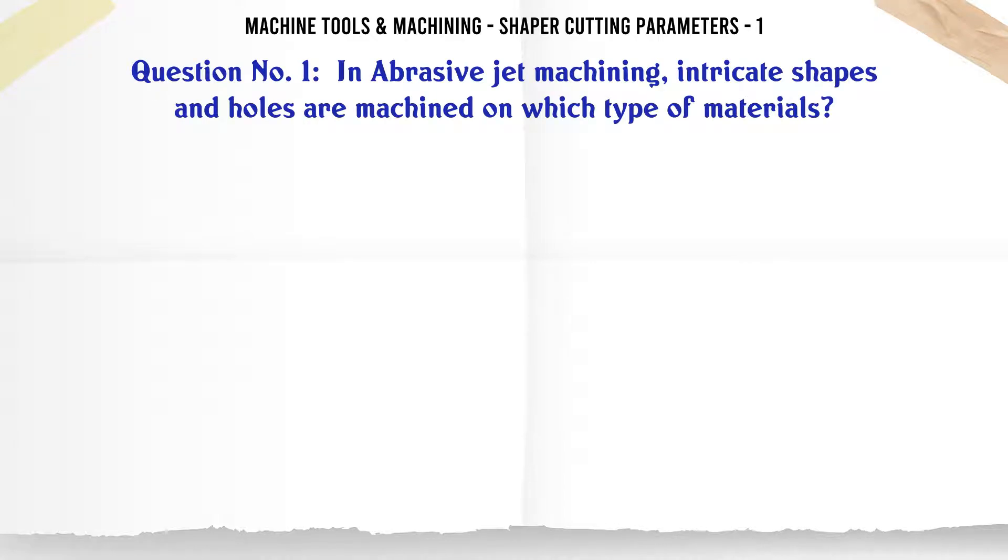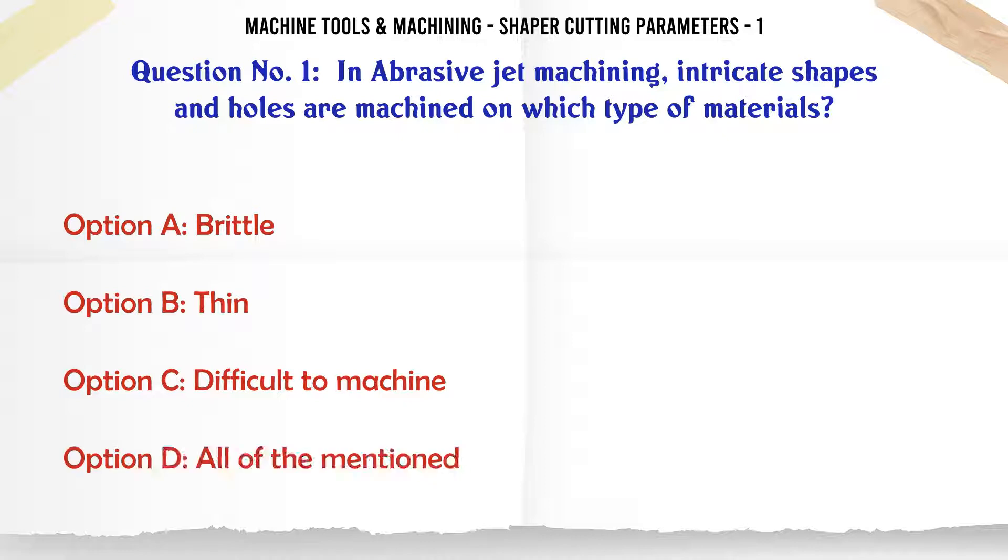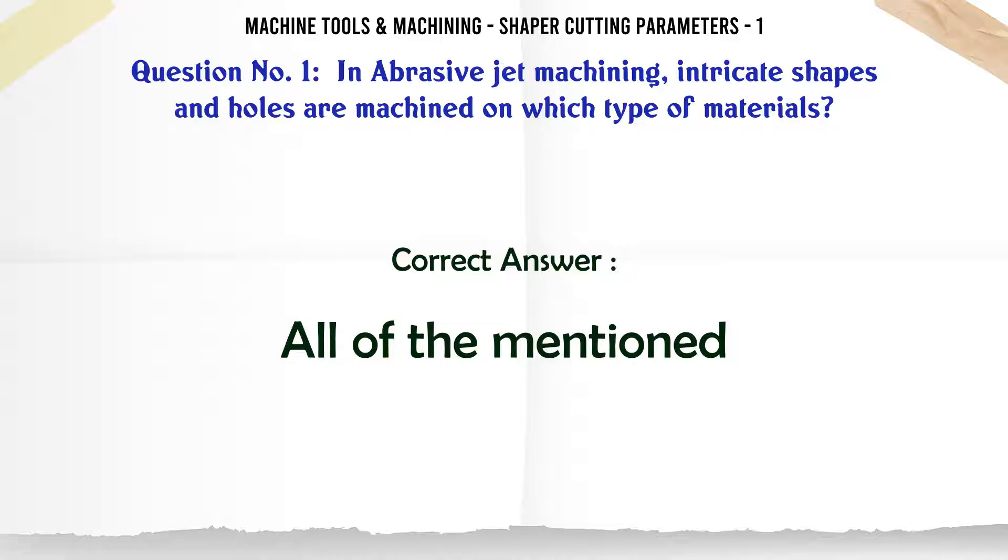In abrasive jet machining, intricate shapes and holes are machined on which type of materials? A. Brittle. B. Thin. C. Difficult to machine. D. All of the mentioned. The correct answer is: All of the mentioned.